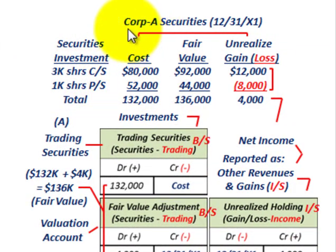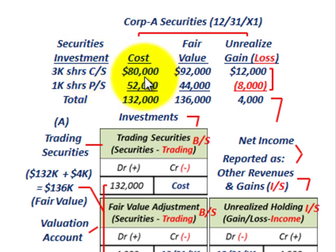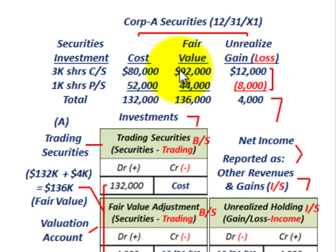Corporation A holds securities as investments. At the end of each reporting period — in this case year-end, 12/31/X1 — you list your securities and determine the cost of the securities you're holding. Some may have been bought during the year, some sold off, but you have to determine what securities you have and their cost. Then you determine the fair value as of year-end — what you could actually sell those securities for. The difference between cost and fair value goes into an unrealized gain or loss.